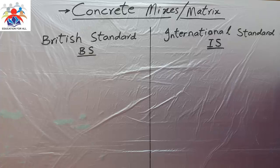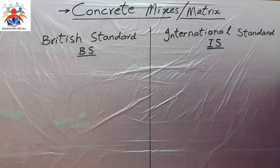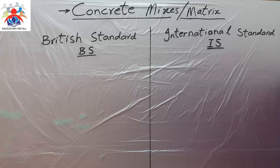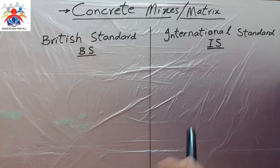We have two different types of concrete mix standards. One is called British Standard, BS, and the second is the International Standard, IS. British Standard is normally used in the UK as well as in Europe. International Standard is normally used worldwide, for example in Asian countries like India, Pakistan, Bangladesh, Nepal, or anywhere else.